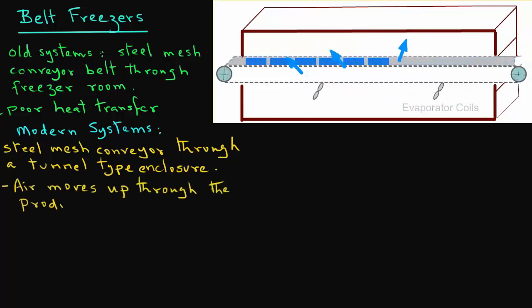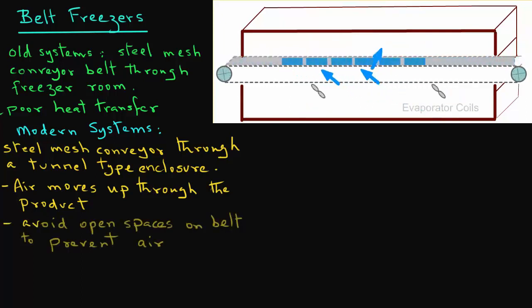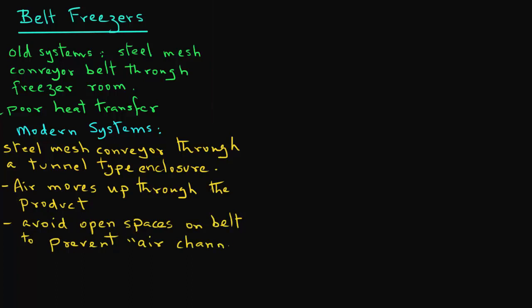However, when placing food on the conveyor belt, care should be taken to avoid open spaces on the belt. This helps prevent air channeling.